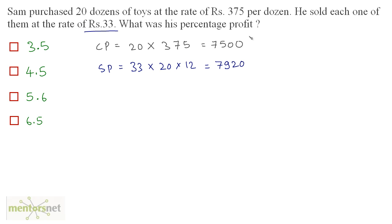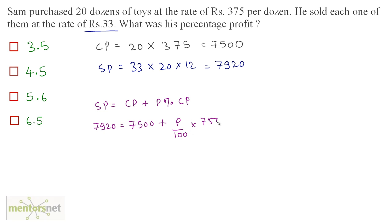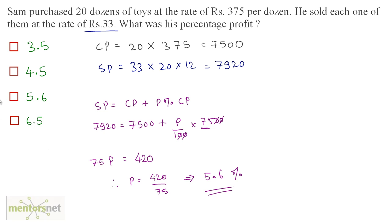What is his percentage profit? The selling price equals cost price plus P percent of cost price. So 7920 equals 7500 plus P upon 100 times 7500. The zeros cancel out, giving 75P equals 7920 minus 7500, which is 420. Therefore P equals 420 divided by 75, which equals 5.6 percent. The correct option is option C.